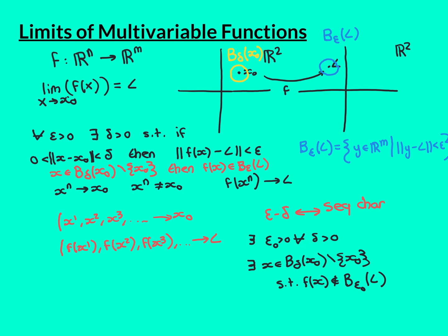The negation of the epsilon-delta definition is: there exists epsilon-zero greater than 0 such that for all delta greater than 0, there exists some point in the deleted delta ball around x0 such that f of that point is not in the epsilon-zero ball around L. If the epsilon-delta definition is not true, then for at least one epsilon, whatever delta you look at, there is at least one point in the deleted delta ball around x0 that is mapped outside the epsilon-zero ball around L.